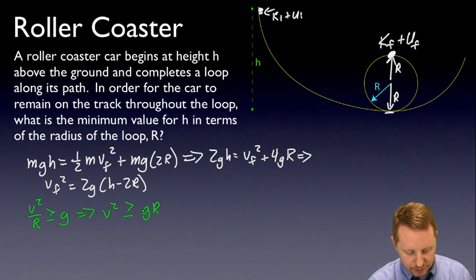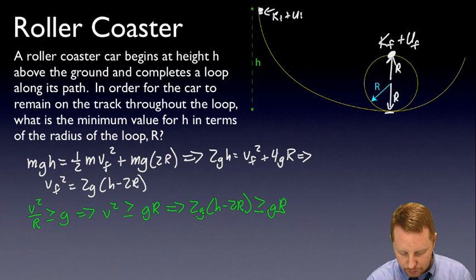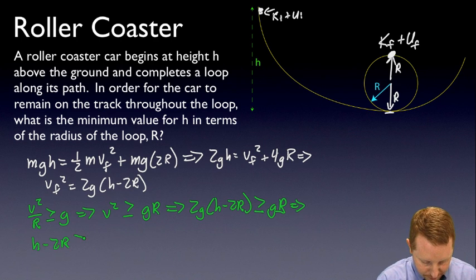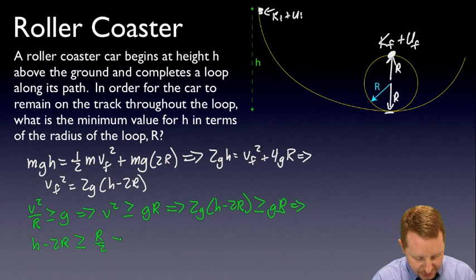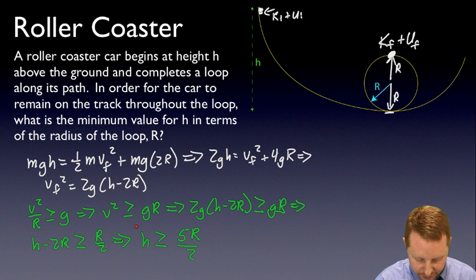Well, when we do this, we already know that v² = 2g(h - 2r), we can start to substitute in. v² for 2g(h - 2r) now tells us that 2g(h - 2r) ≥ gr. Divide both sides by 2g and I get that h - 2r ≥ r/2. And if I want just h, add 2r to both sides, h ≥ 2r + ½r, which is 5r/2. So there's our answer.